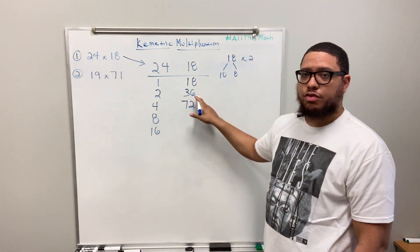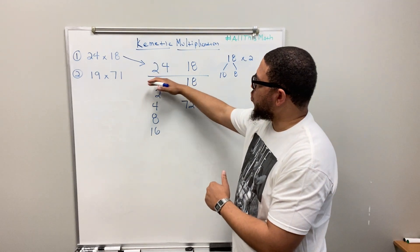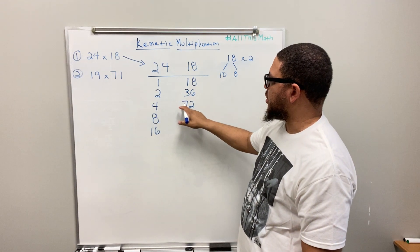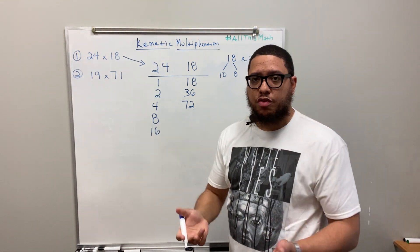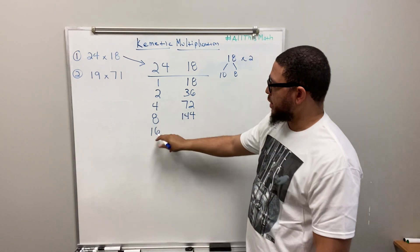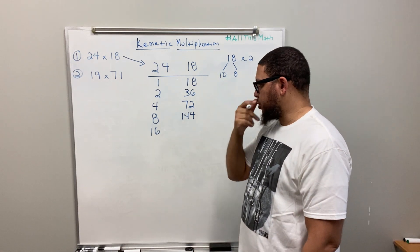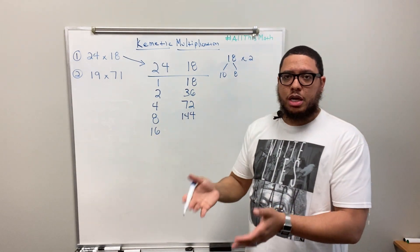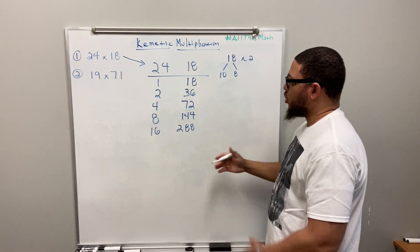Make sure your rows line up: 1 matches with 18, 2 with 36, 4 with 72. Now double 72: 70×2=140, 2×2=4, so 140+4=144. One more doubling since I have one more number in the first column: 144×2 — 100×2=200, 40×2=80, that's 280, and 4×2=8, so that's 288.